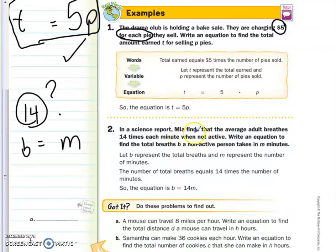Mia finds that the average adult breathes 14 times. So what we do is take a look at the words. It says 14 times each minute. Right here is the key. Should it reveal to you that the 14 is the coefficient for a minute? So that's why we have the total number of beats is equal to 14 beats per minute. That's all you have to do for these.